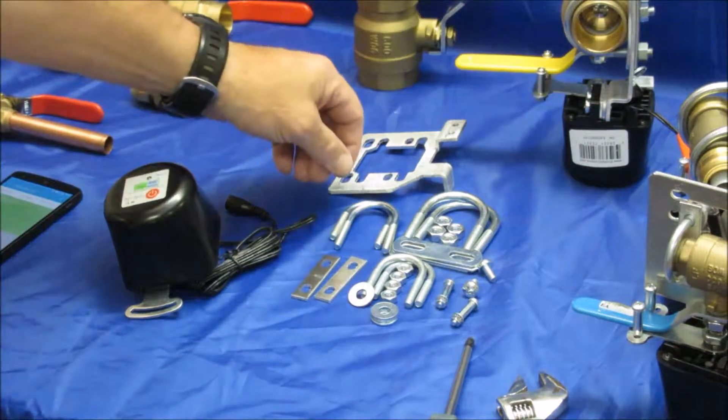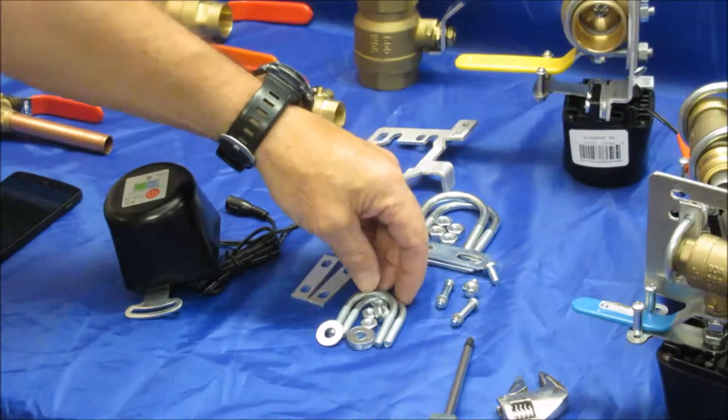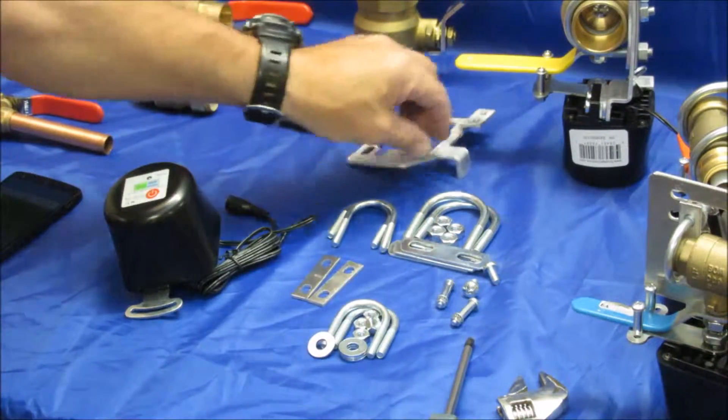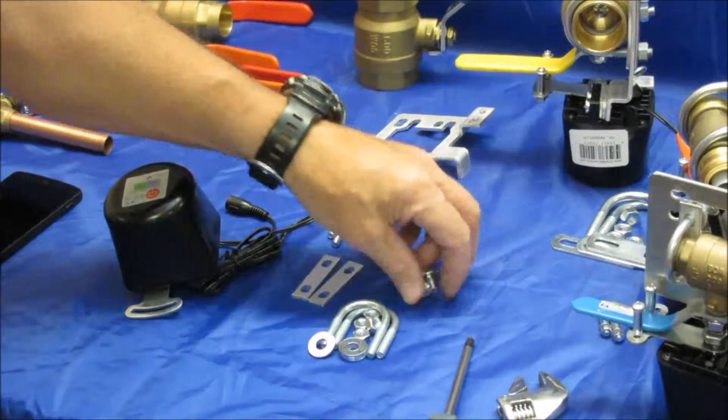In this case, we're going to use the smallest set of U-bolts and the nuts that go with that, and some washers. So let's just push these other ones out of the way, parts we don't need right now.